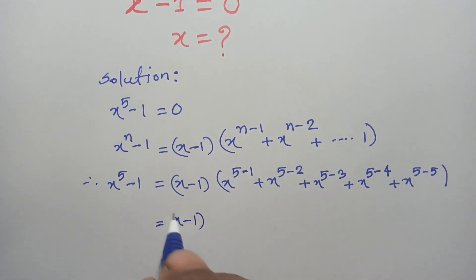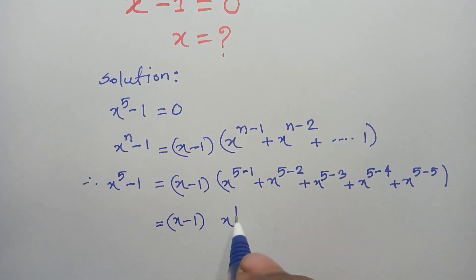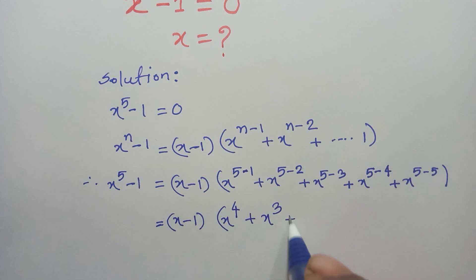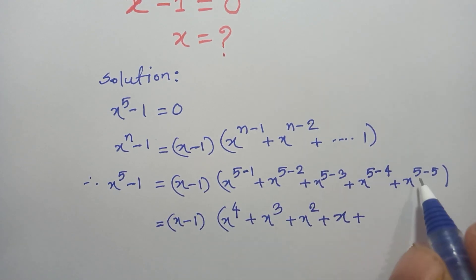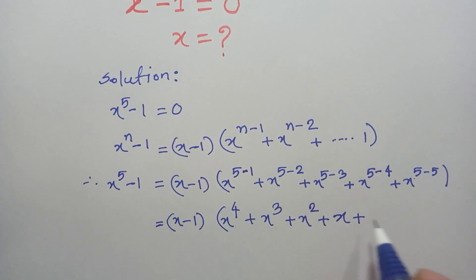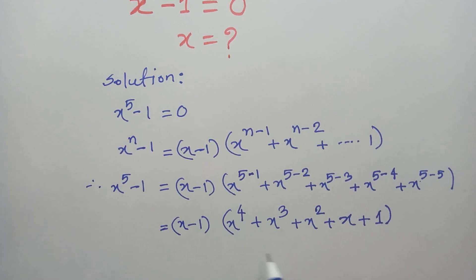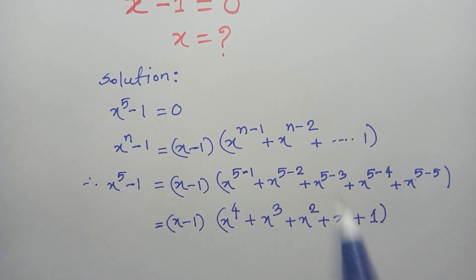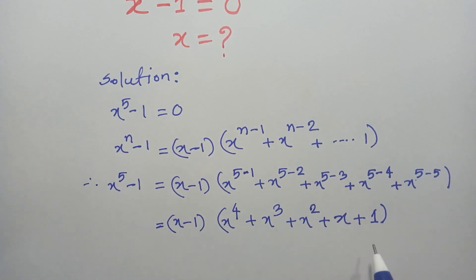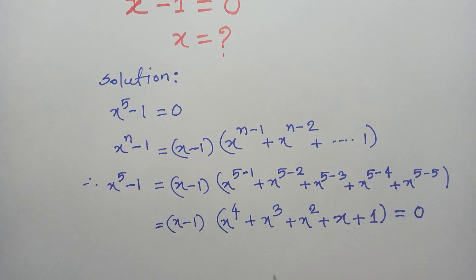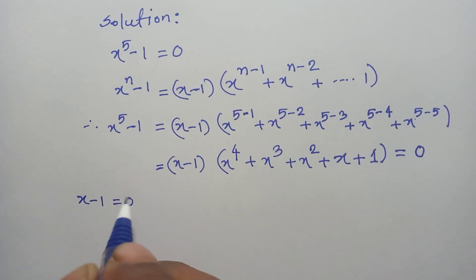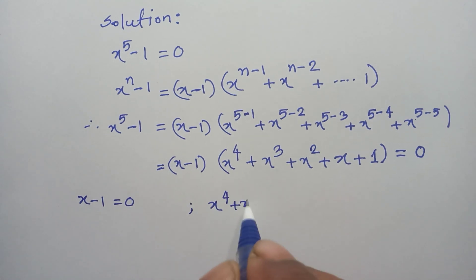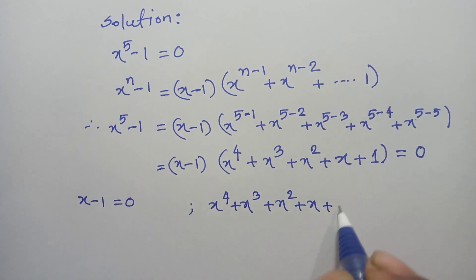So, x minus 1 times: x to the power 5 minus 1 is x to the power 4, plus x to the power 3, plus x to the power 2, plus x to the power 1 which is x, plus x to the power 0 which is 1. Now, x to the power 5 minus 1 equals 0, so x minus 1 times this expression equals 0. Therefore, we have two solutions: x minus 1 is equal to 0, and the other solution is x to the power 4 plus x cubed plus x squared plus x plus 1 is equal to 0.